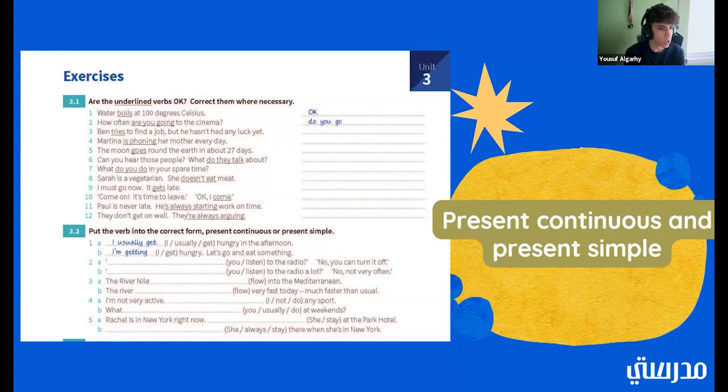Six, can you hear those people? What do they talk about? Is that one good? What are they talking about? Good. Number seven, what do you do in your spare time? What about that one? That one's OK. Good. All right. Number eight, Sarah is a vegetarian. She doesn't eat meat. That one's also OK. Good. I must go now. It gets late. It is getting late. Good.